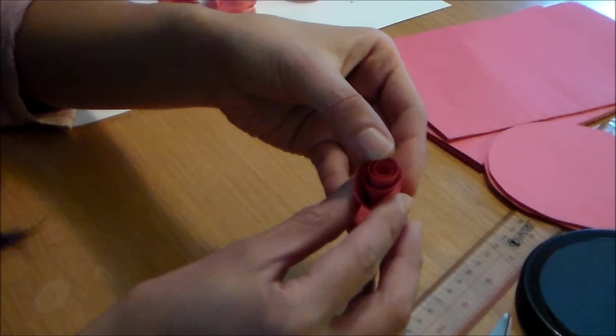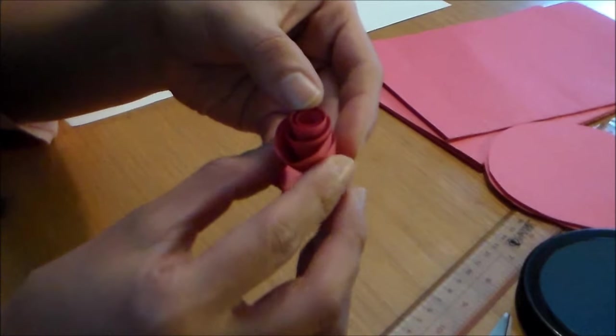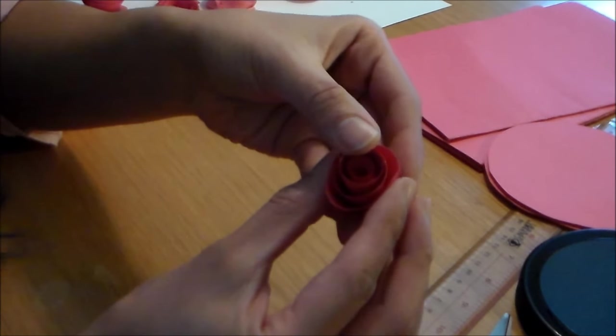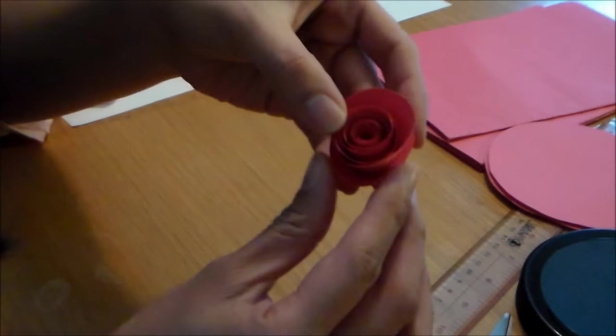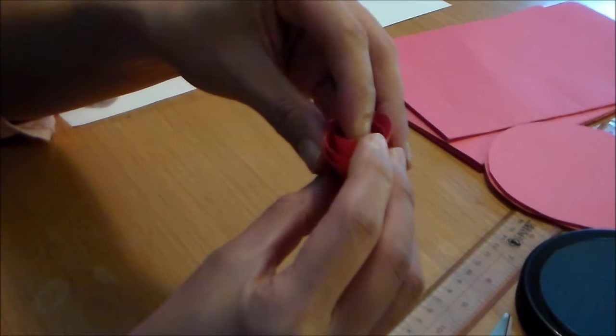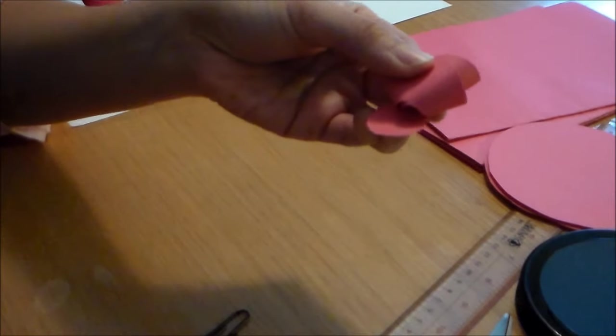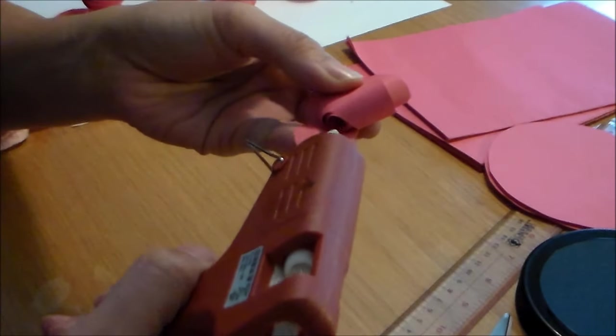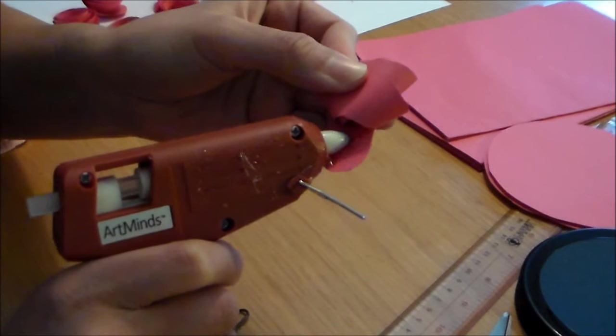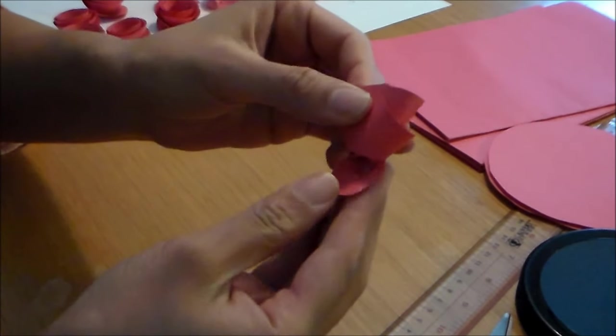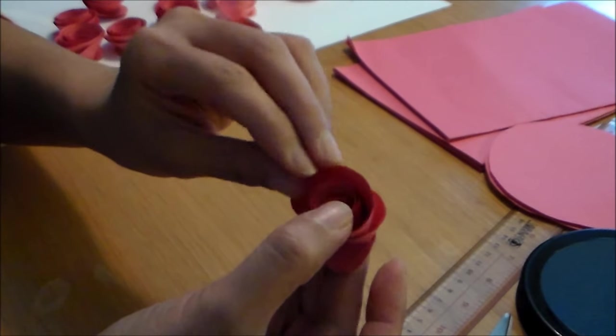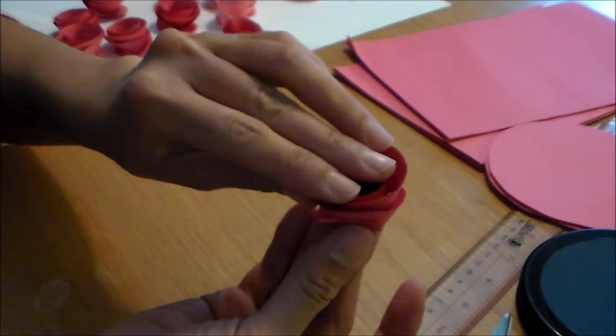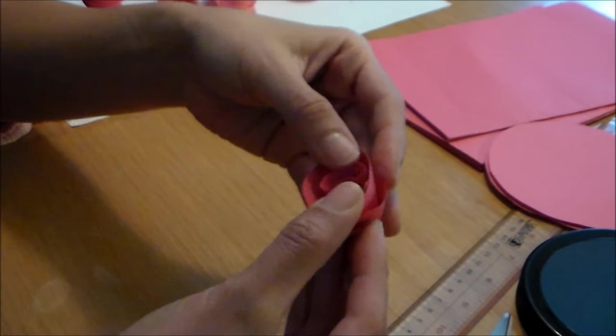You can go ahead and uncoil your flower to whichever size you like. So just slowly let it uncoil. And when you find your desired size, you can go ahead and put some glue at the bottom of your flower. So I'm using hot glue just because it dries faster. I'm just going to put it on the base here. Hold it down and just let it set for about a minute. And it should be done.